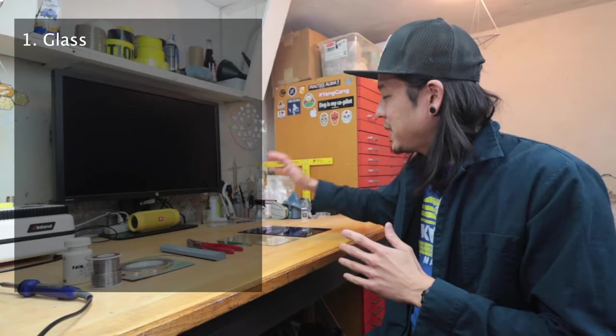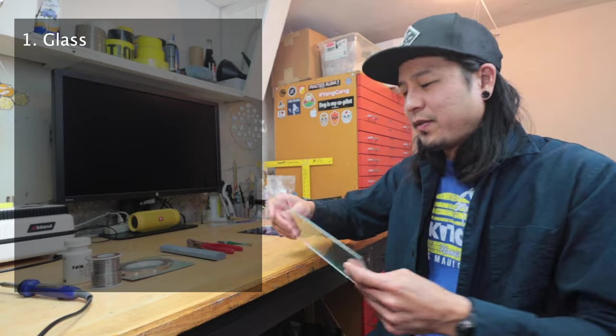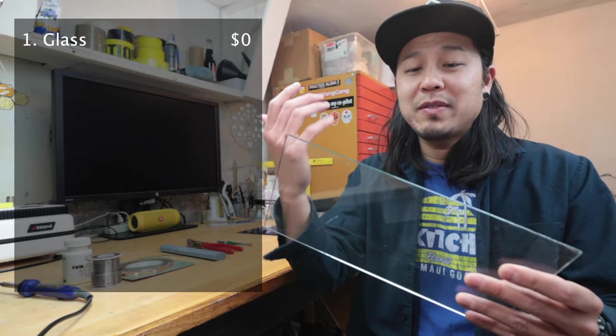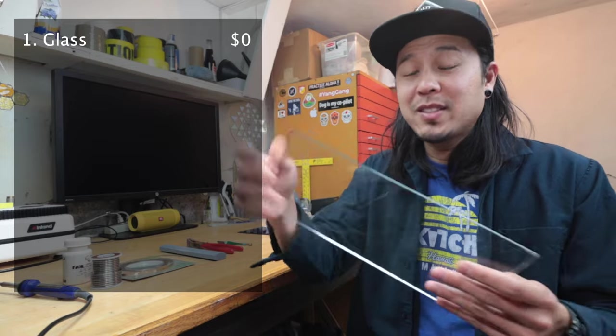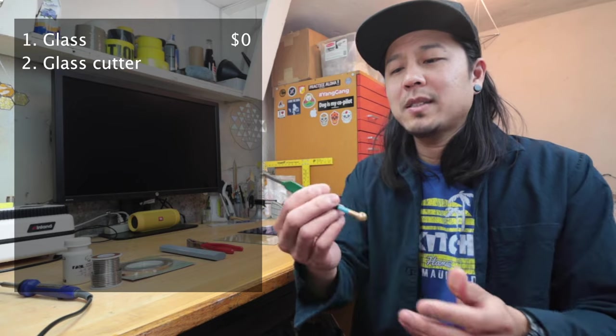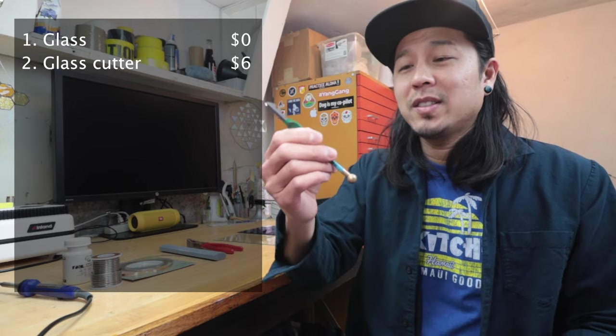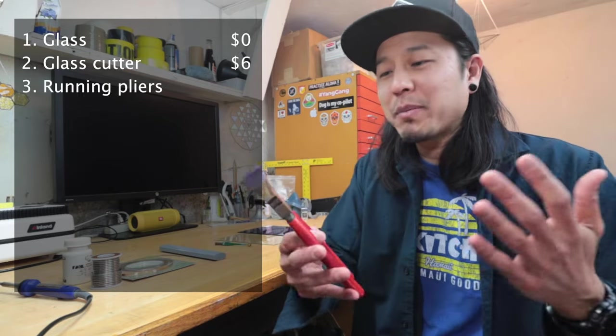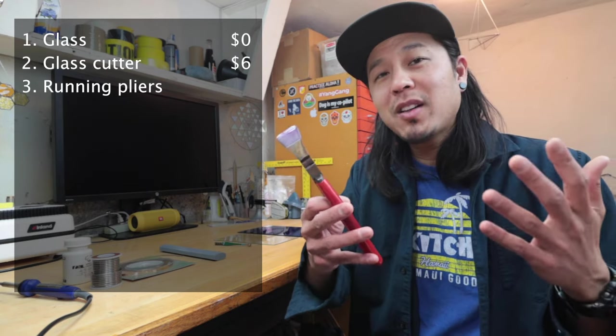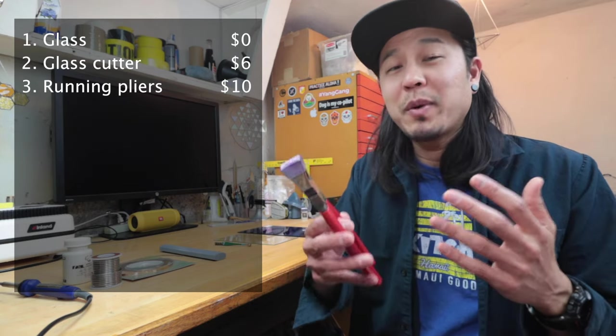That's pretty much it. Let's tally it up and see what we've got. For glass, I'm pretty much going to say that it's free since you can get this from an old picture frame. You don't have to buy glass right away when you're starting out. So we'll say glass is free. Next up is the glass cutter, which is about $6, $5 or $6. For the running pliers, I would say this is something pretty useful. It's going to cost you about $10 and I think it's going to be worth that price.